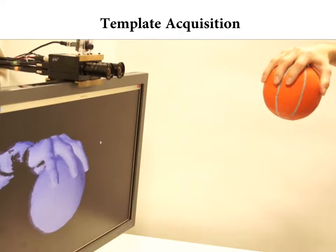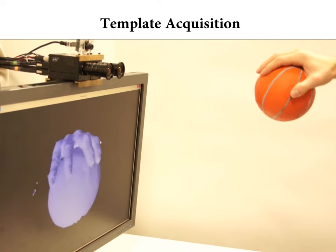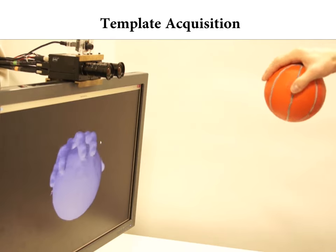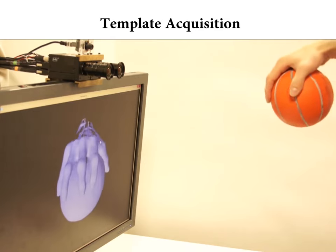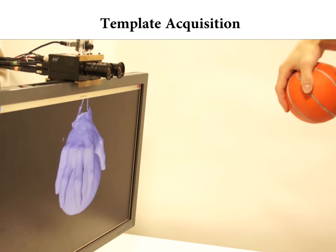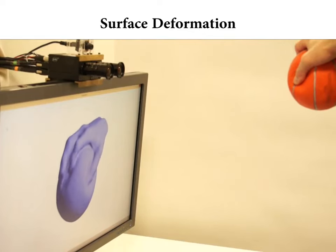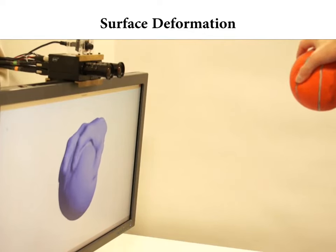Since we don't rely on surface priors such as skeletons or parametric shape models, we can process arbitrary input objects. In this example, we capture deformations caused by compressing a basketball.